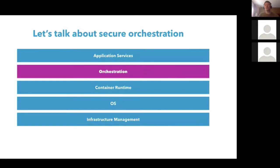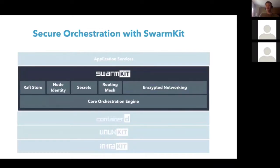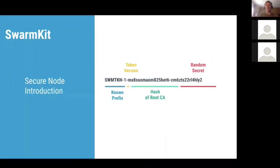Talking about secure orchestration — this is what a container stack looks like: infrastructure management at the bottom, operating system on top, container runtime, orchestration, and then application services. In the Docker case this is what we call SwarmKit with swarm mode. It has a bunch of components that all play together to provide a secure experience. Diogo Monica from the security team explained how these different features and components play together to provide a complete, secure orchestration experience.